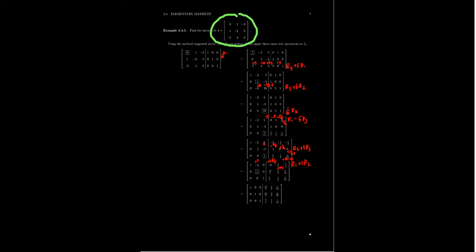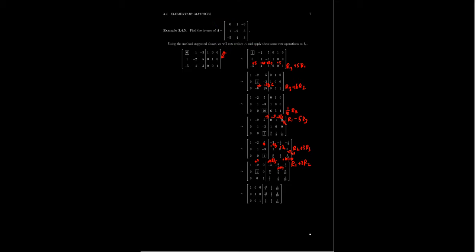The matrix A was a 3x3 matrix. Its first row is 0, 1, negative 3; its second row is 1, negative 2, 5; and its third row is negative 5, 4, and 3. We're not focused on the inverse this time — we're focusing on the operations that turned A into the identity. The first thing we did was interchange rows 1 and 2, then replaced row 3 with row 3 plus 5 times row 1.